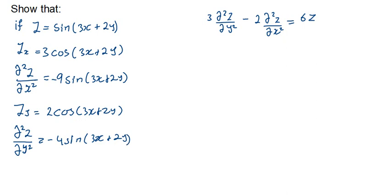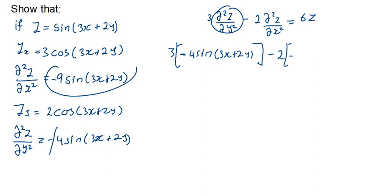Now we have 3 multiplied by what we have here, which is minus 4 sine of 3X plus 2Y, minus 2 times minus 9 sine of 3X plus 2Y. We have to show that it equals 6Z.